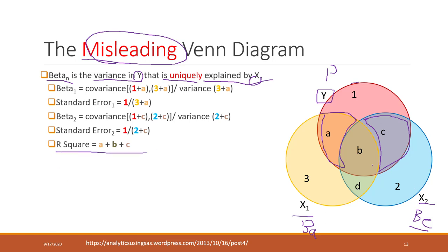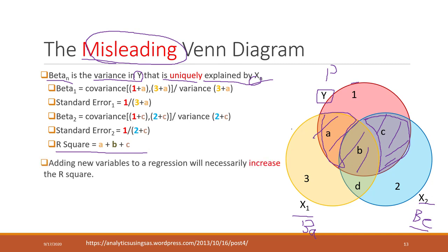The R-square tells us the entire portion of Y that has been explained by the model together. One important point: if we add new variables, it will always increase the R-square. Even if a variable has only a tiny relationship with Y, adding it still increases R-square. So if you bring more variables into your model, it will always increase R-square.